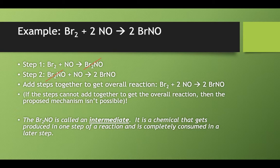That Br2NO, the thing we canceled out up above, we call that an intermediate. It's a chemical that gets made in one step of a reaction, but is immediately used up in a later step.